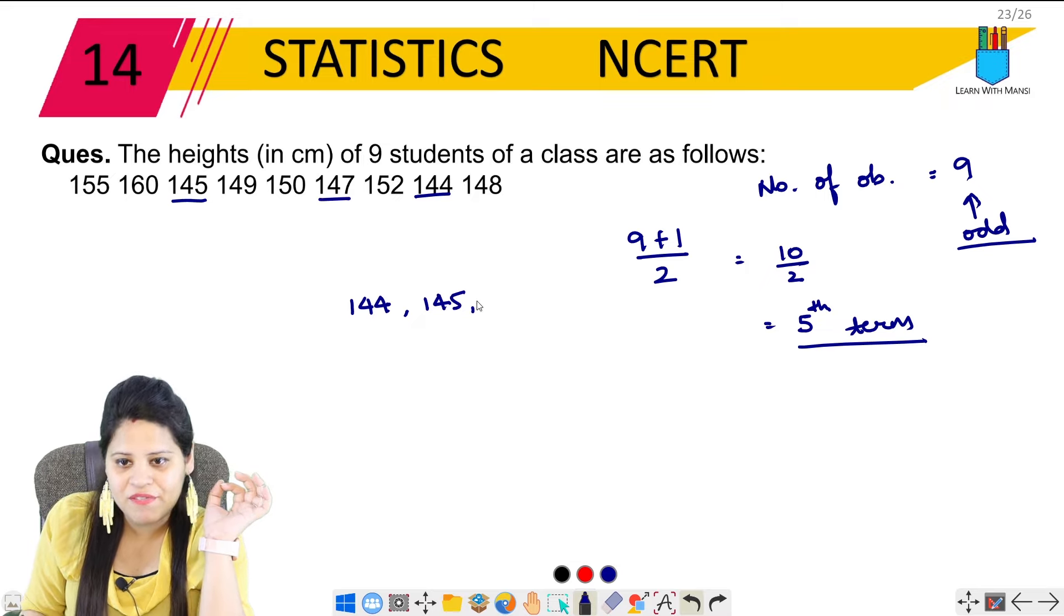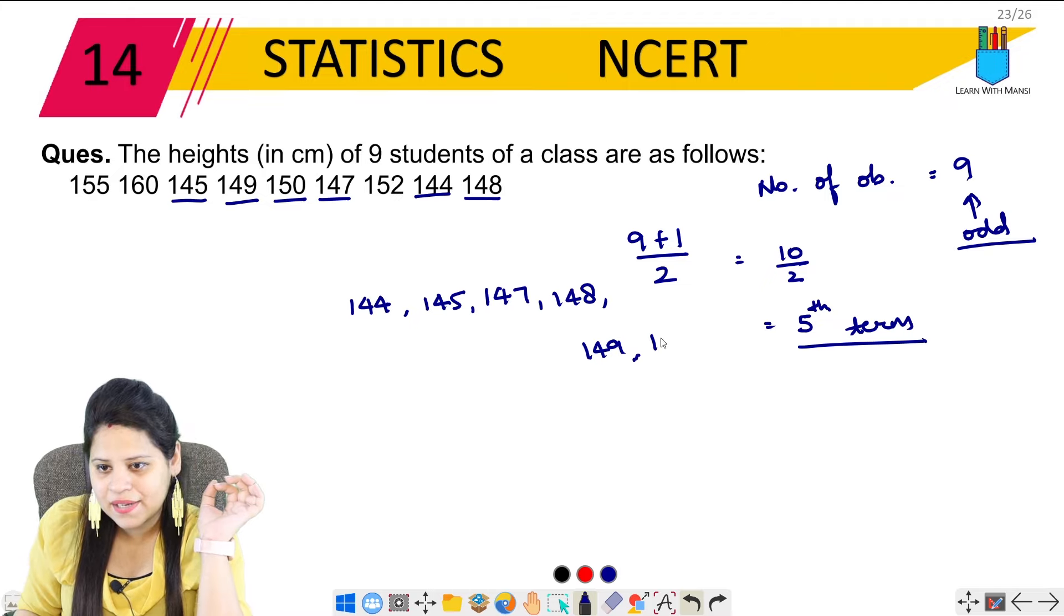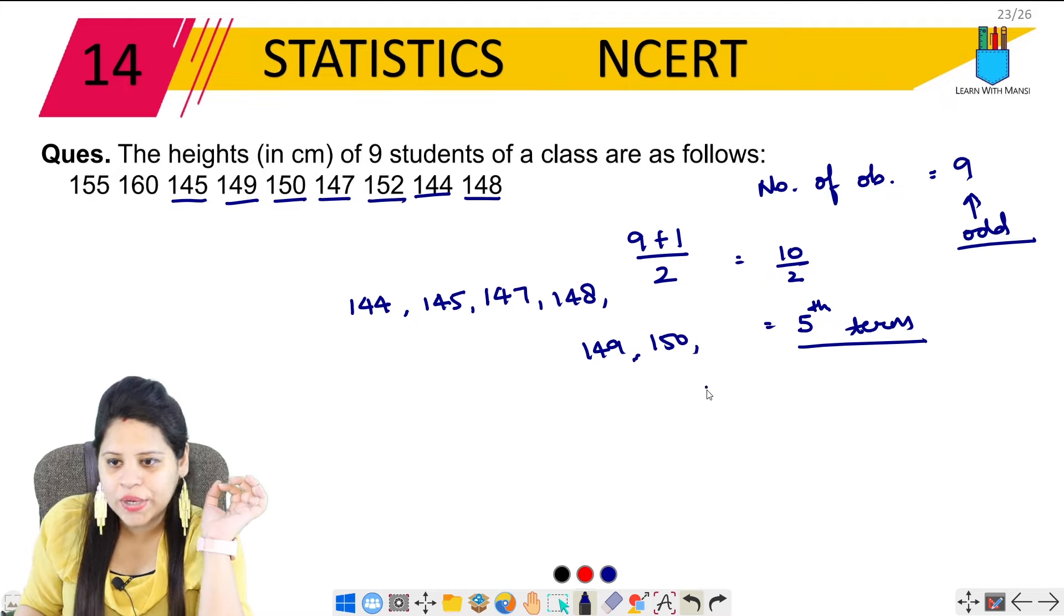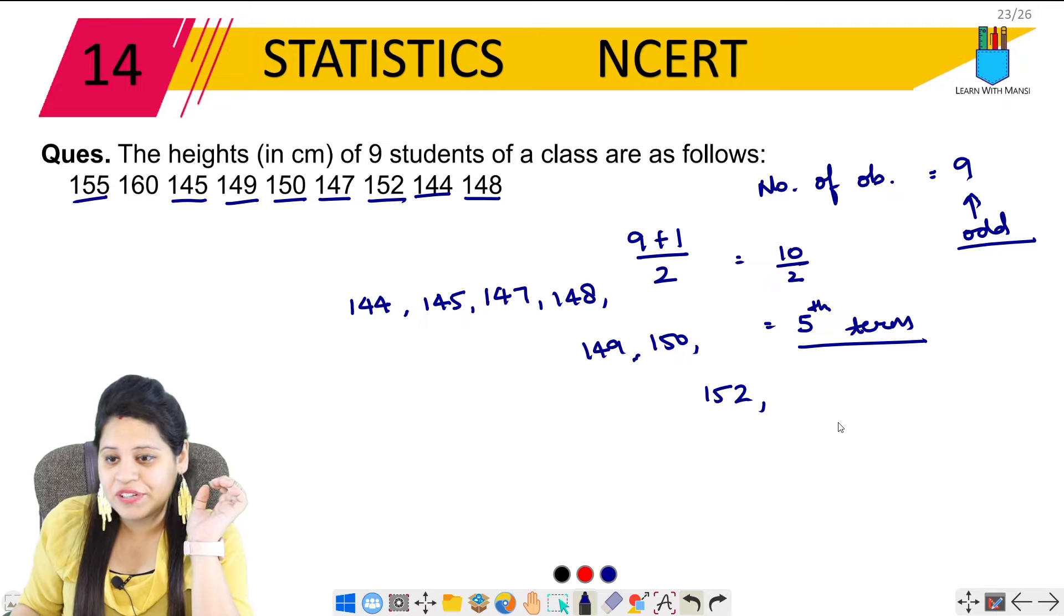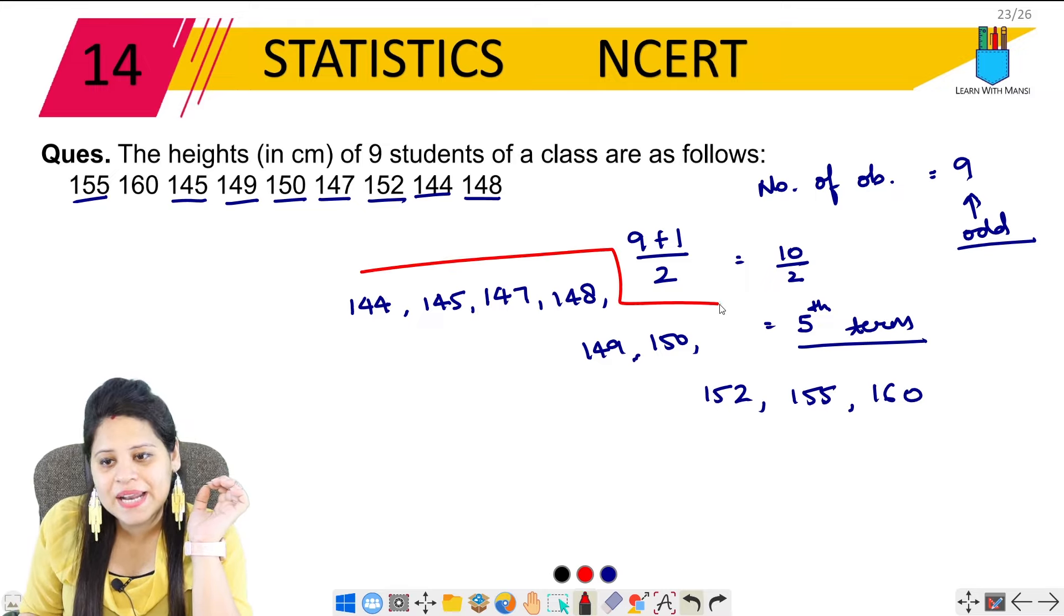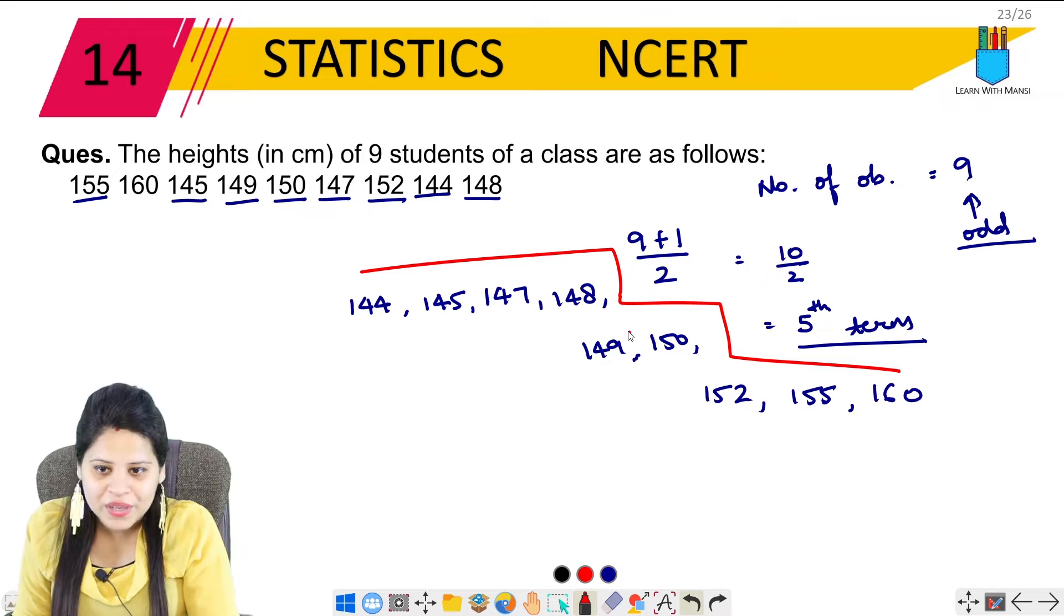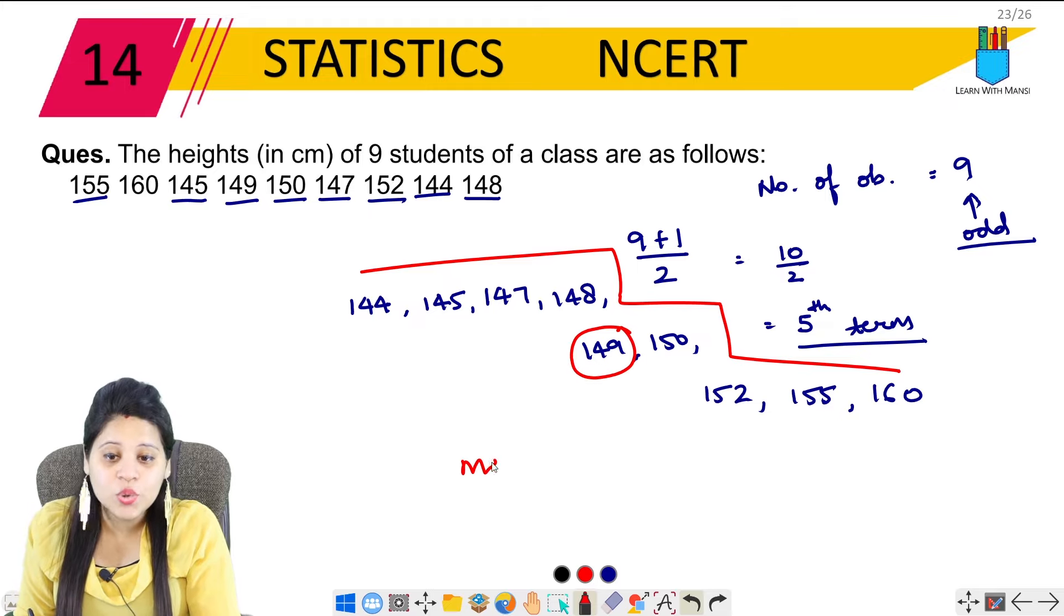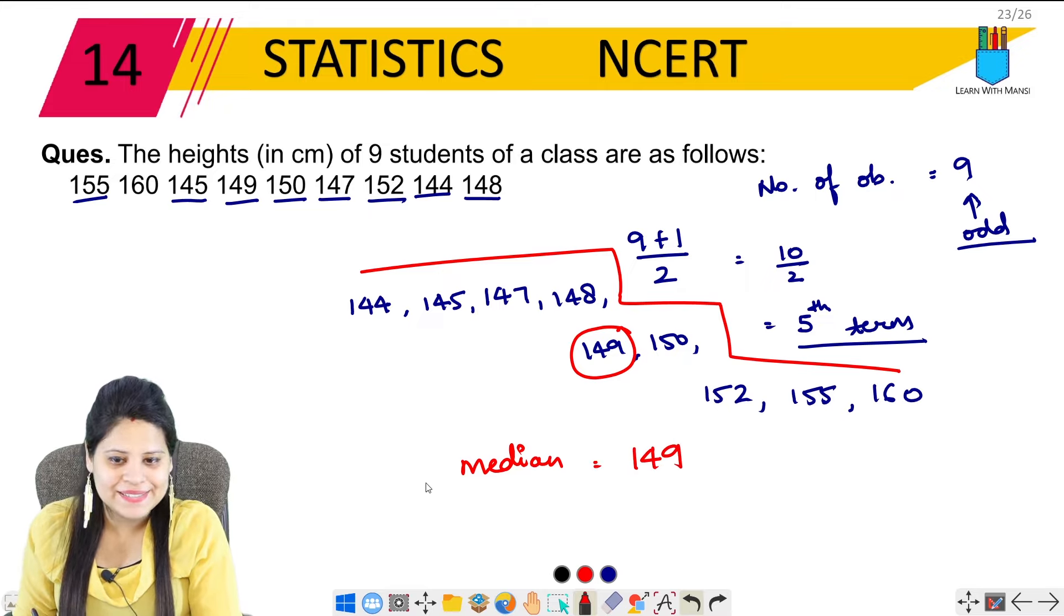So 1, 2, 3, 4, 5, 6, 7, 8, 9 - number of observations is 9, which is odd. So odd is very easy to remove middle value. What is the formula? 9 plus 1 upon 2, N plus 1 upon 2. So what will happen? 10 upon 2 which equals 5. Now 5 means the 5th term will be median. Now how will we get to the 5th term? First we arrange this data in ascending order.